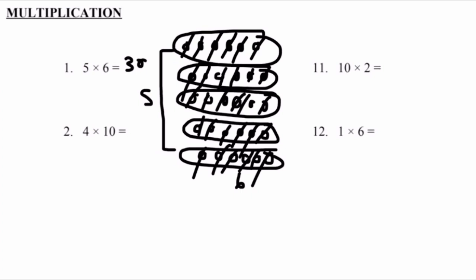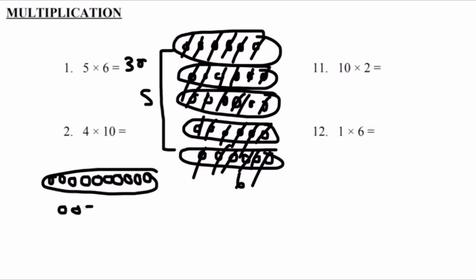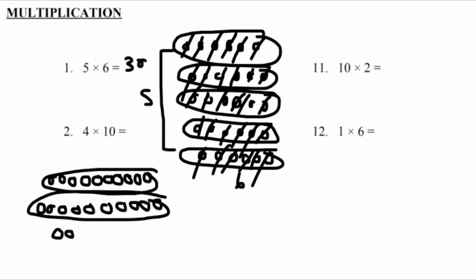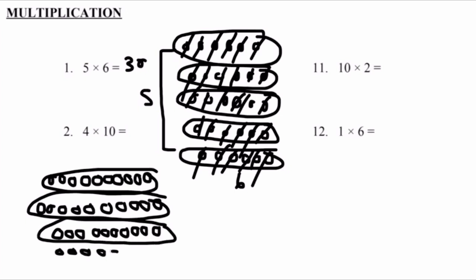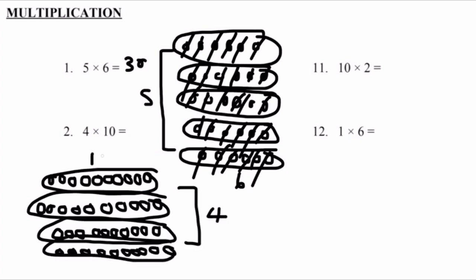Number 2: we have 4 times 10. Let's draw it out. We draw our first group of 10 circles, our second group of 10, our third group, and our fourth group. Now we have a total of 4 groups of 10 circles.